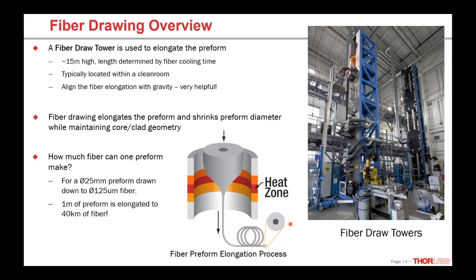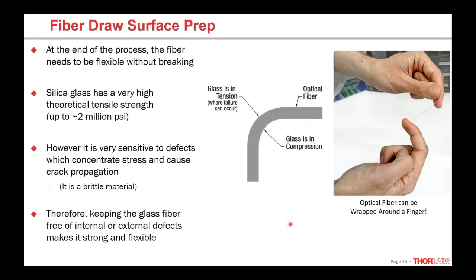One pretty neat fact: if we have a typical preform of 25 mm in diameter and one meter long, we're going to draw it down into 125 micron glass diameter fiber — the common fiber size. That one-meter-long preform can actually be elongated into 40 kilometers of fiber. Of course the amount of material is conserved, but the volume of a cylinder has r-squared in the equation, so that's why we get that massive elongation ratio.